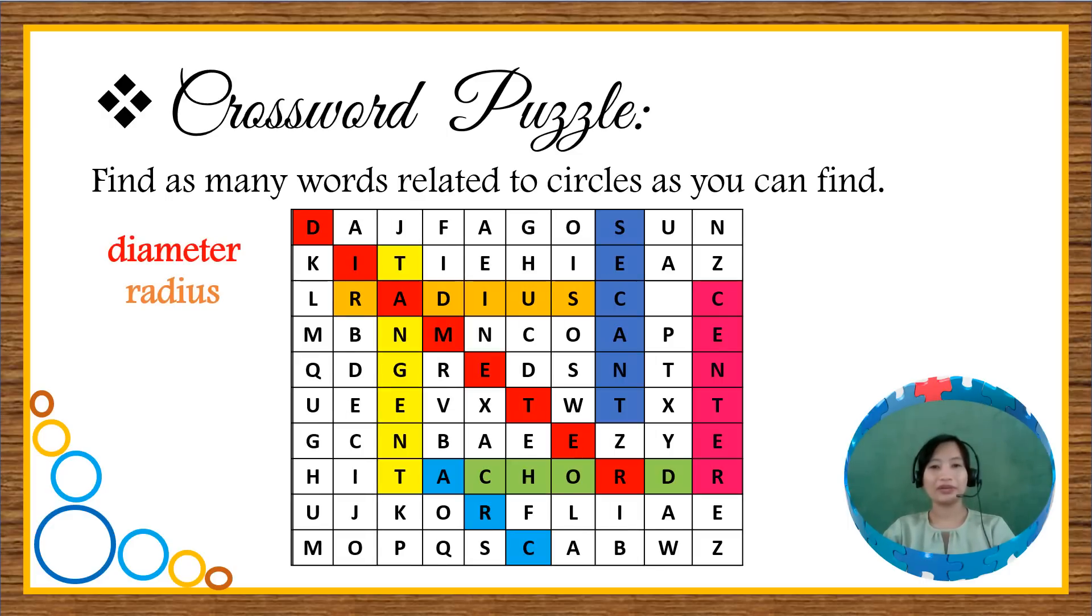You should have found the following words: Diameter, radius, secant, center, tangent, chord, and arc. How many did you get?